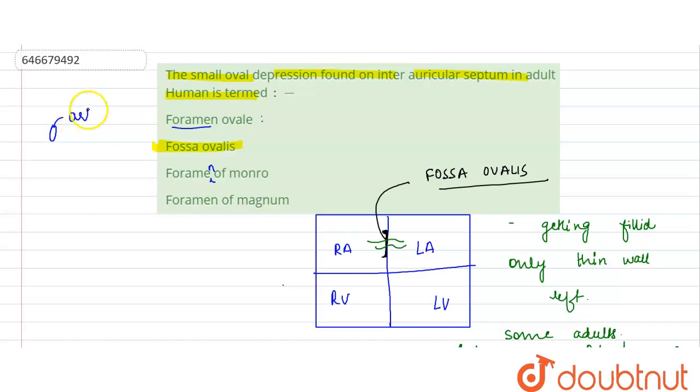What is the difference between fossa and foramen? Foramen is the opening which is for the artery or any nerve, and it provides sometimes a nutrient or the opening.